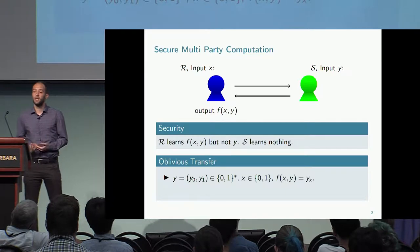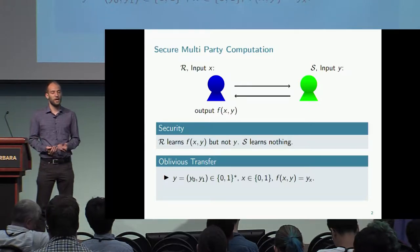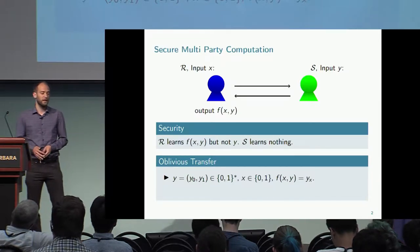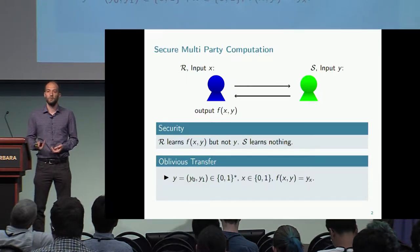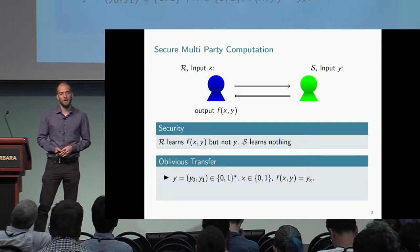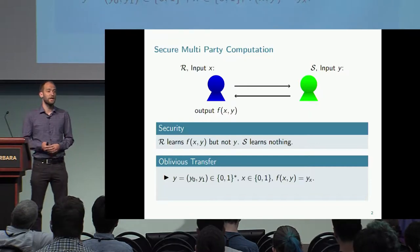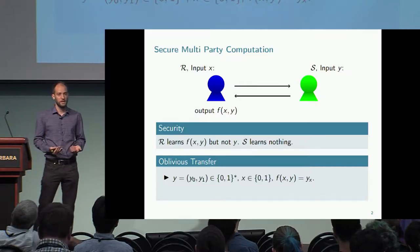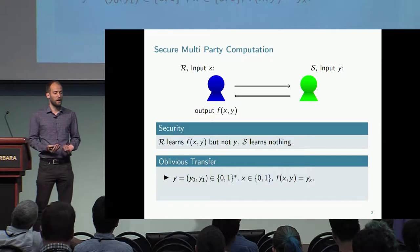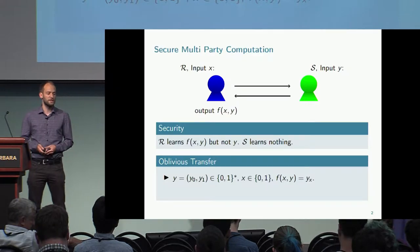Oblivious transfer can be seen as a special case of secure multi-party computation with a very simple functionality. This functionality takes as input two strings Y0 and Y1 and a choice bit X, which selects one of the strings and outputs it. The receiver chooses one string and learns it, but should not learn anything about the other string. The sender should not learn which string the receiver chose.